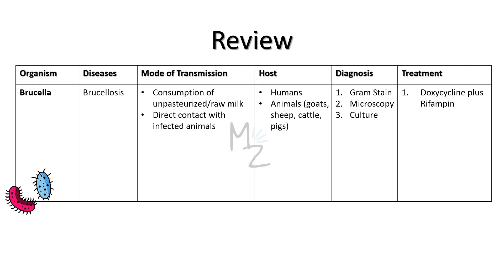Quick recap: The organism discussed today is Brucella, responsible for brucellosis — also called undulant fever, Malta fever, or Mediterranean fever. It enters the human body by consumption of contaminated animal products like unpasteurized or raw milk, or by direct contact with infected animals. It causes zoonotic infections from goats, sheep, cattle, and pigs. Diagnosis is based on gram staining, microscopy, and culture. Treatment is doxycycline plus rifampin — and remember, doxycycline is a tetracycline. That's it for today's video — assalamu alaikum!